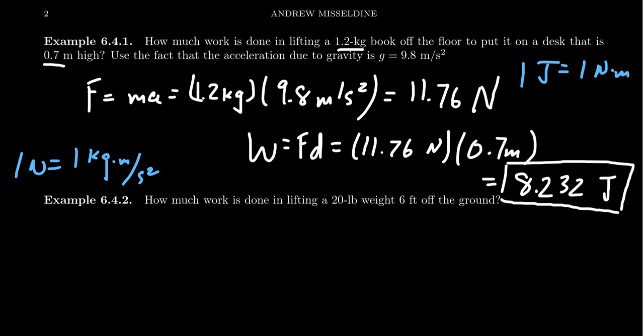Now, if we were to do a similar type exercise using the English units, like pounds and feet, how much work is done in lifting a 20-pound weight six feet off the ground. Now, one thing to remember when you're using these American-British units, pounds is not a measurement of mass. Pounds is actually a measurement of weight. Pounds is a force. It's not a mass. This right here is a force. As such, you don't have to multiply 20 pounds by acceleration due to gravity, because the 20 pounds has it already built into it. What I'm saying is the force due to weight of this object is already 20 pounds.